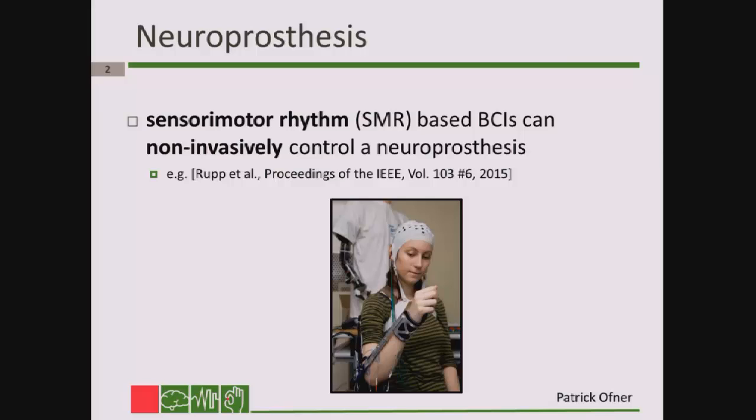A neuroprosthesis can be realized with functional electrical stimulation. You have an electrical stimulator, and you cleverly place electrodes on the arm of a spinal cord injured person. In that way, you can restore several movements, for example opening or closing the hand. And because we are BCI researchers, we want to control a neuroprosthesis with brain signals. Non-invasively, we can realize this with an EEG system by detecting sensory motor rhythms.